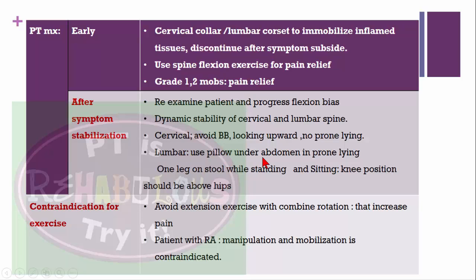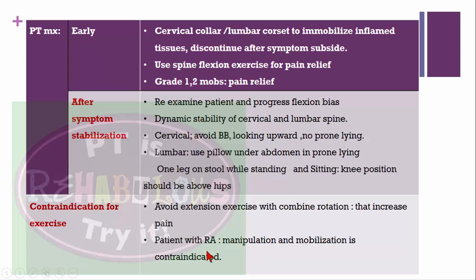Dynamic stability advice for spondylosis: for cervical, avoid backward bending, looking upward, and prone lying. For lumbar, use a pillow under the waist or abdomen in prone lying. Advise standing on one leg while standing for long periods — for example, at work, use a stool to rest one leg. In sitting, knee position should be above the hips. Contraindications: avoid extension exercise with combined rotation, as it increases pain. Avoid mobilization and manipulation in rheumatoid arthritis patients with spondylosis.